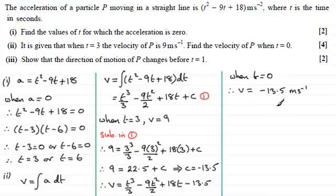Well, this is good because in part 3, it says show that the direction of motion of P changes before t equals 1. So if I was to substitute now t equals 1 into our formula here for v, let's see what we get. So when t equals 1, what does v equal?